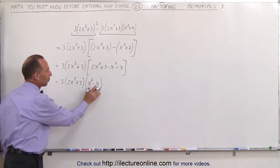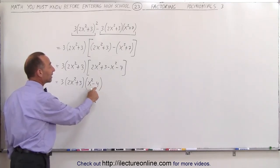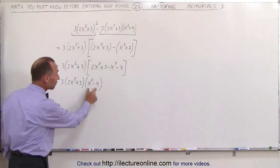Now notice this right here. This is, in essence, the difference of squares. Whereas this is x squared minus 2 squared, so this can now be factored.